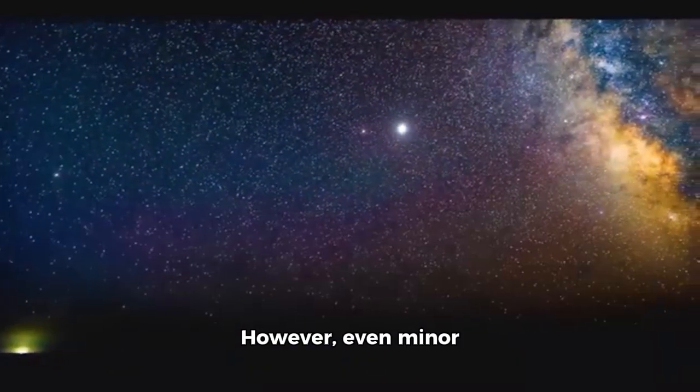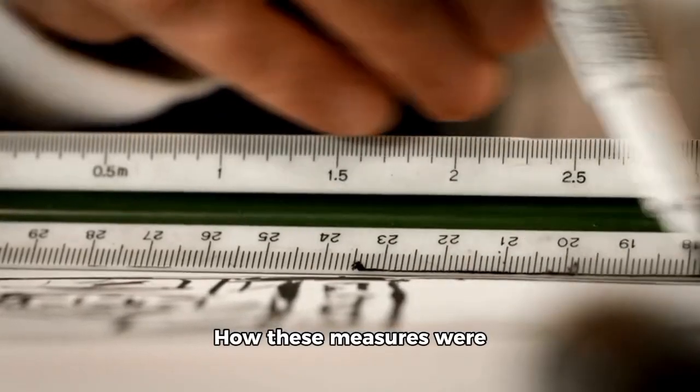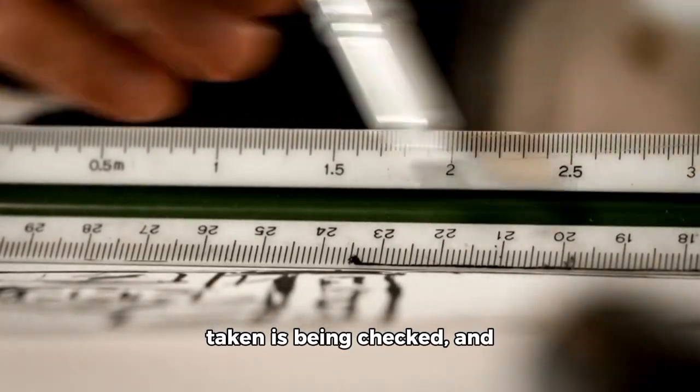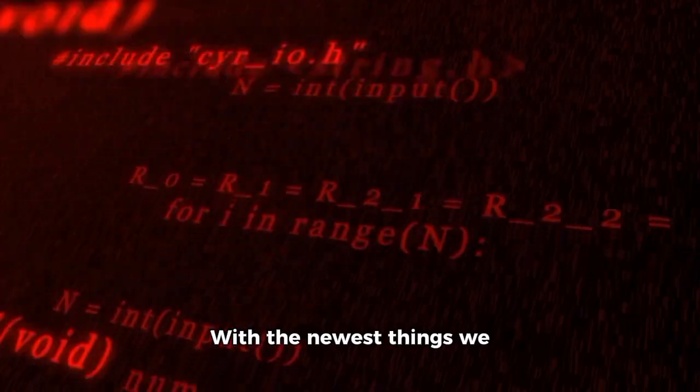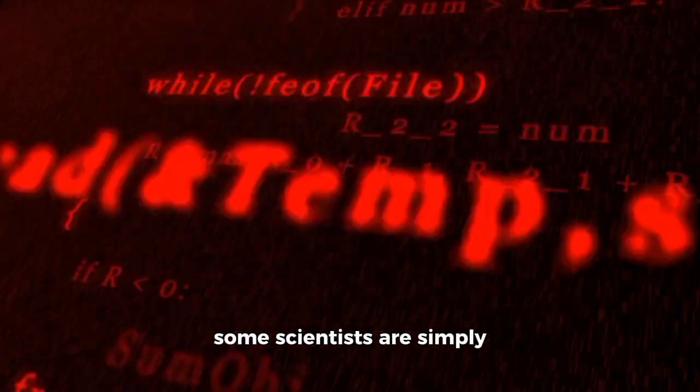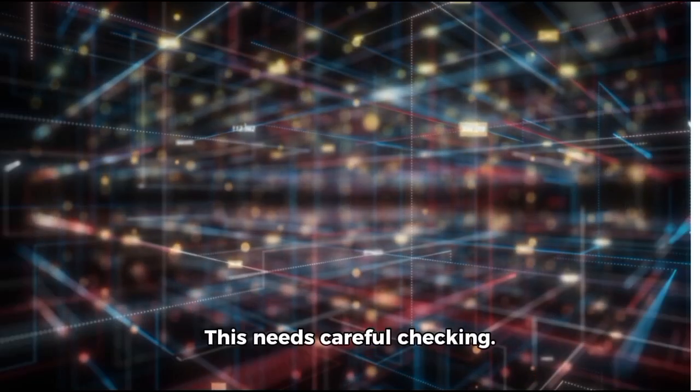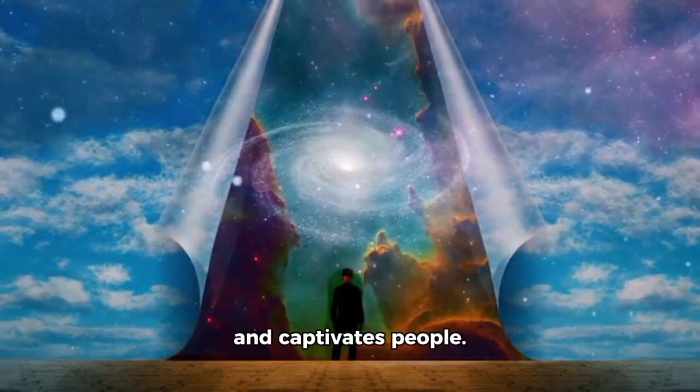Redshift is used in physics to measure speeds and distances in space. However, even minor errors could result in very different outcomes. How these measures were taken is being checked, and it will be fascinating to observe the outcomes. With the newest things we've found, it's important to inquire whether they are redshift errors or if some scientists are simply denying the facts. This needs careful checking.